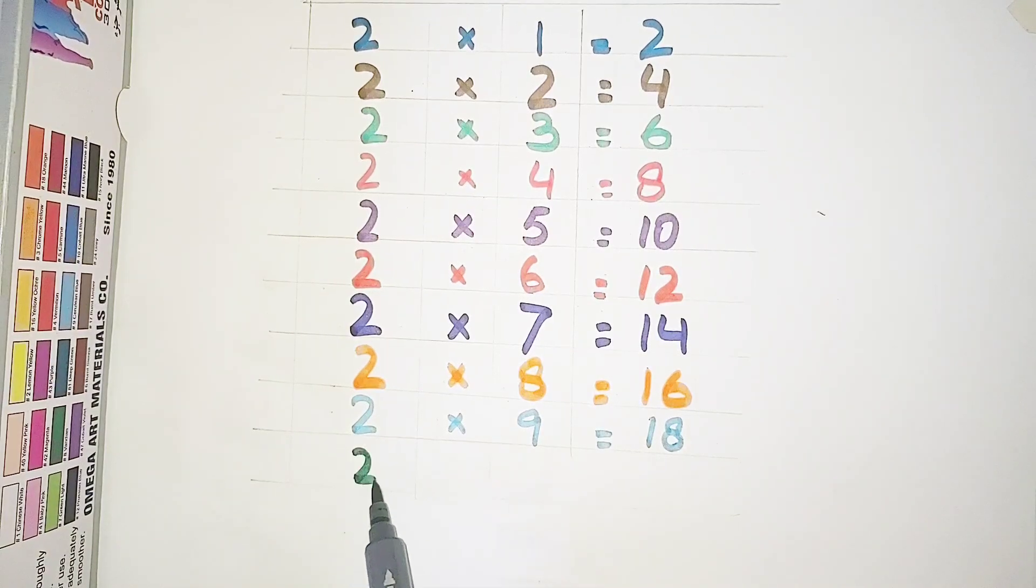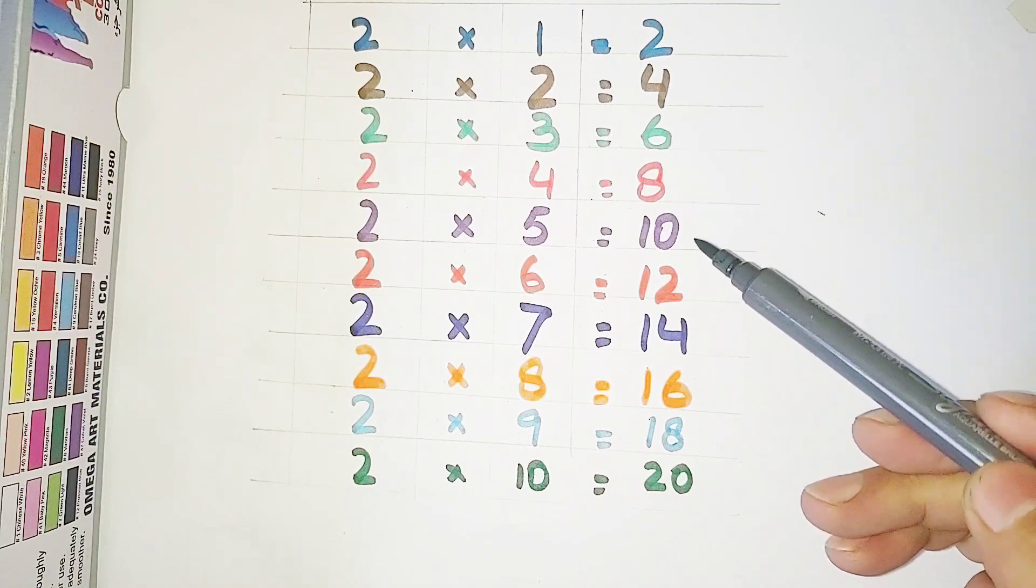Last, 2 multiplied by 10 is equal to 20. 2 ones are 2, 2 twos are 4, 2 threes are 6, 2 fours are 8, 2 fives are 10.